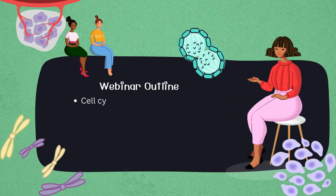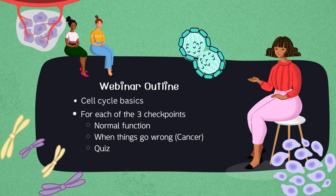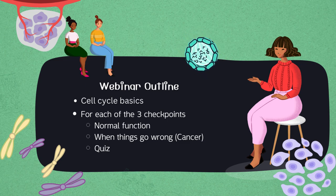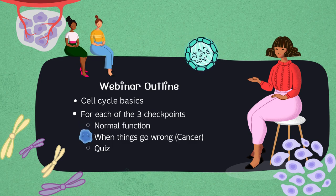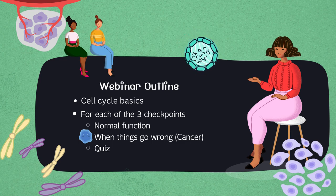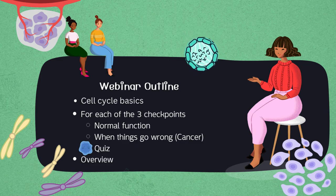In this webinar, we'll begin by reviewing the basics you might already know about the life cycle of a cell. We'll take a deep dive into each of the critical checkpoints covering normal cell division. Then we'll uncover the common malfunctions of these checkpoints that can pave the way for cancer. You will also have an option to test your knowledge at each stage.